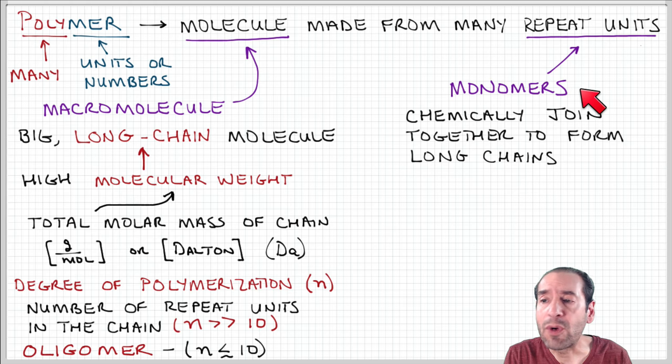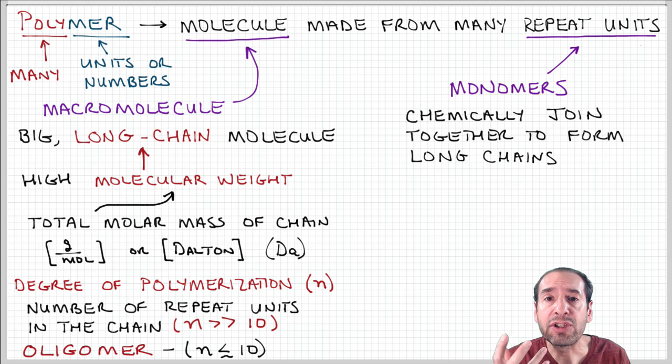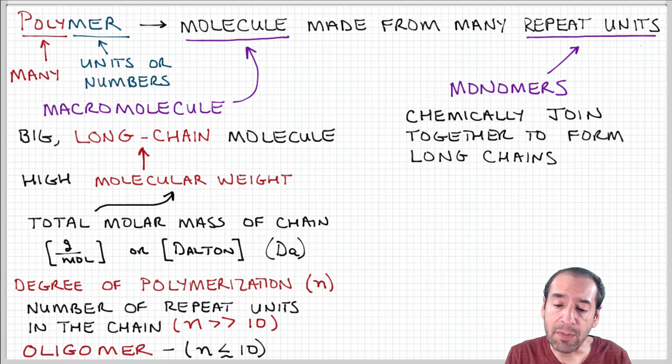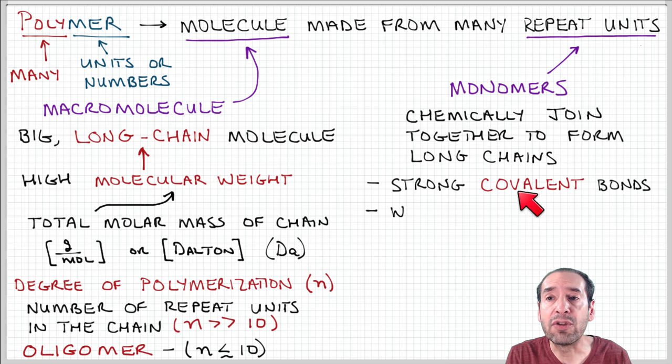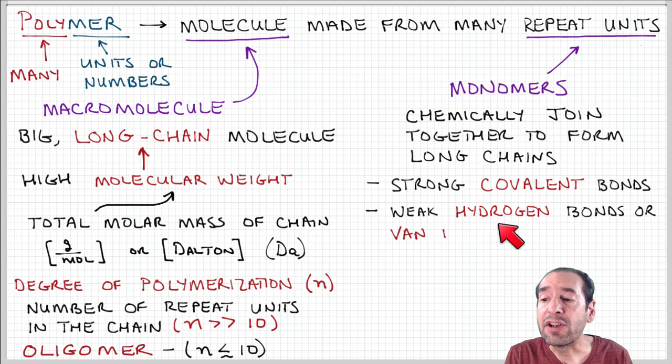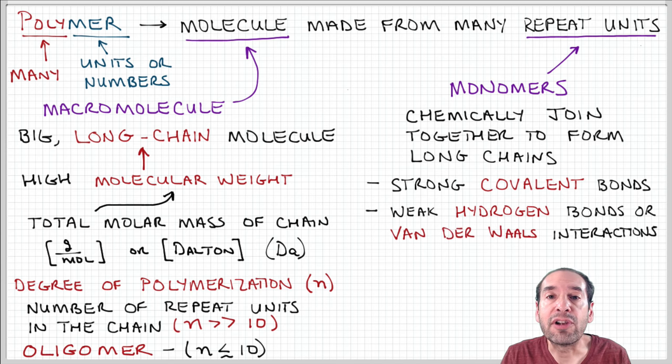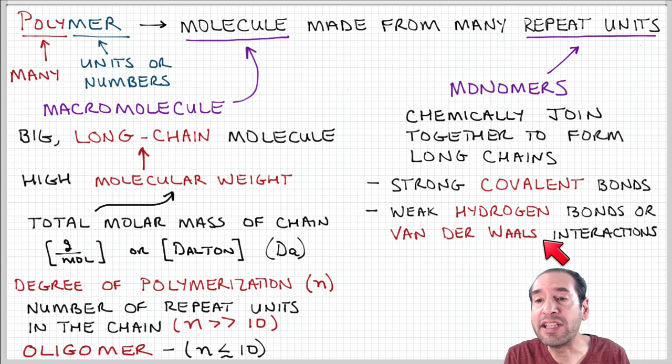We'll talk more soon about what kinds of monomers produce what kinds of polymers. But for now, just know that these monomers are held together by strong chemical bonds. So these are usually covalent bonds along the backbone that hold these individual units together. There can also be weaker interactions that also play a role in determining the overall structure of the polymer chain, things like hydrogen bonding or van der Waals interactions. But these usually come into play at a more detailed level.